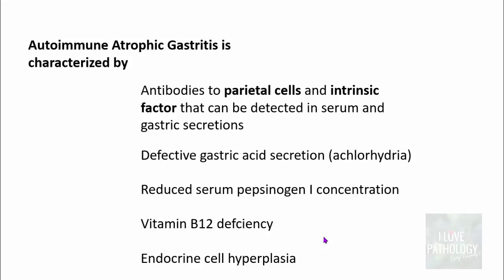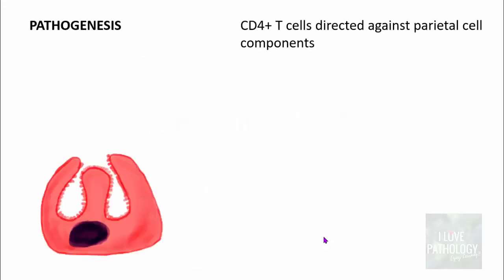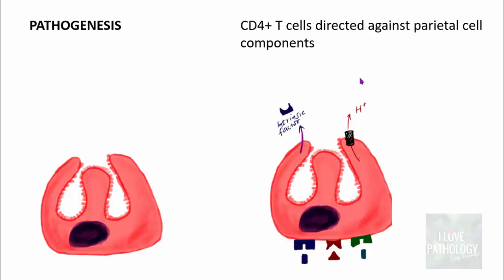We will now understand the mechanism of each of these features. The main pathogenetic mechanism involves CD4-positive T cells directed against parietal cell components. The most important components against which antibodies are present are the proton pump and intrinsic factor — specifically antibodies to the proton pump (the hydrogen-potassium channel) and antibodies to intrinsic factor.